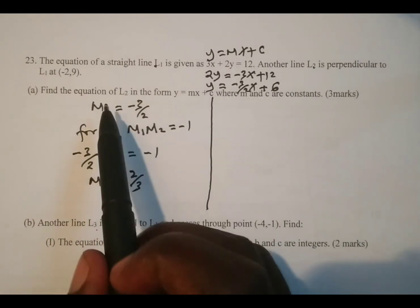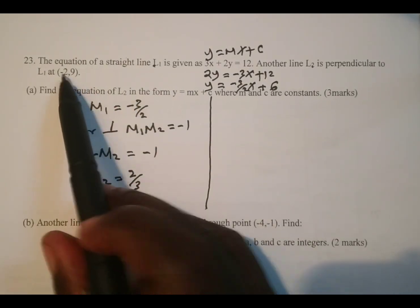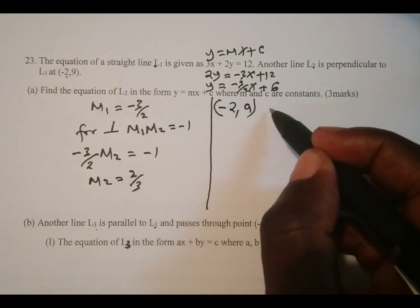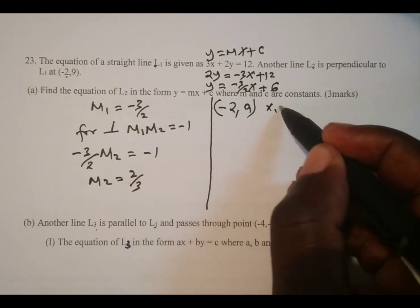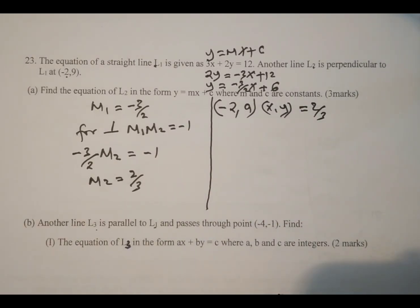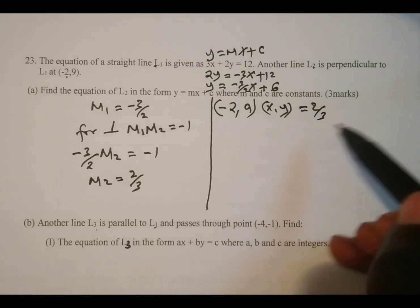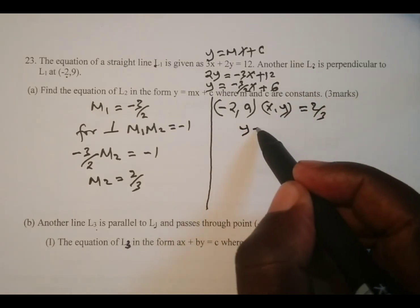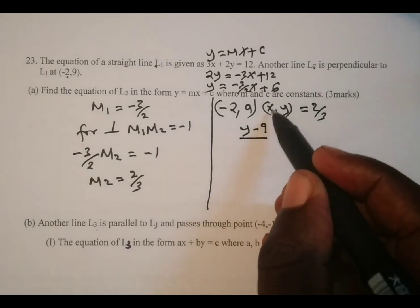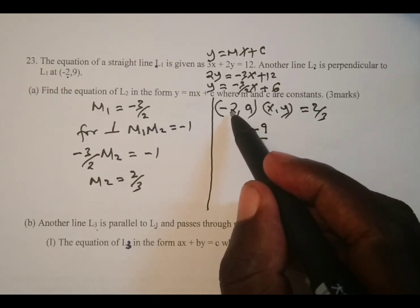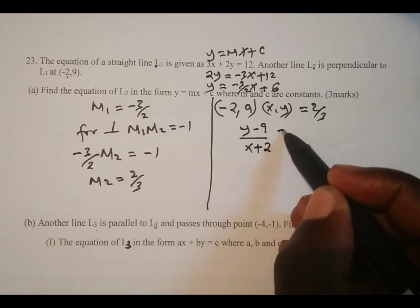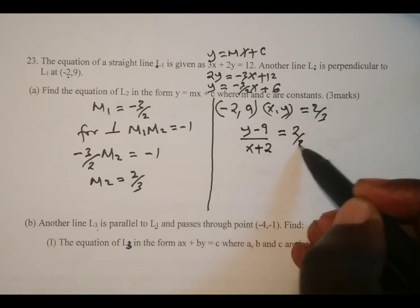To get the equation of L2, we use the given point negative 2, 9 and another arbitrary point xy, along with the gradient 2 thirds. We set up: y minus 9 divided by x minus negative 2, which gives x plus 2, equal to 2 thirds.